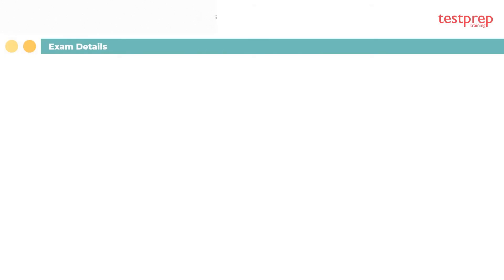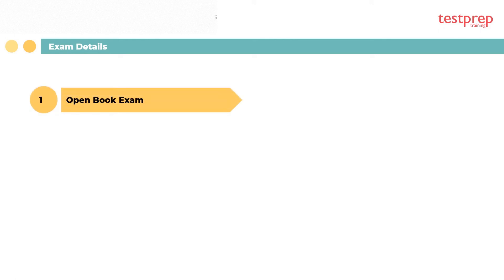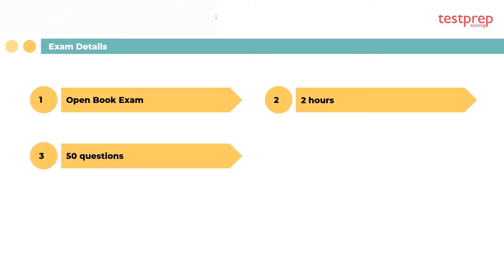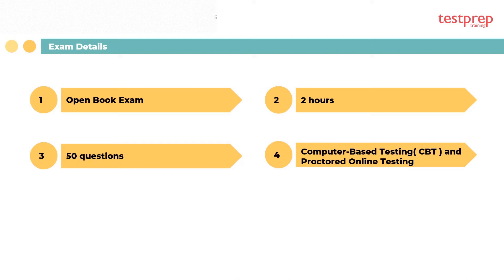Exam details: the commercial plumbing inspector exam has an exam ID of P2. The exam is an open-book exam. The candidate will be given two hours to successfully complete the exam, and there will be 50 questions. The exam method will be computer-based testing and proctored online testing. The ICC examination fee will be $219 US dollars.